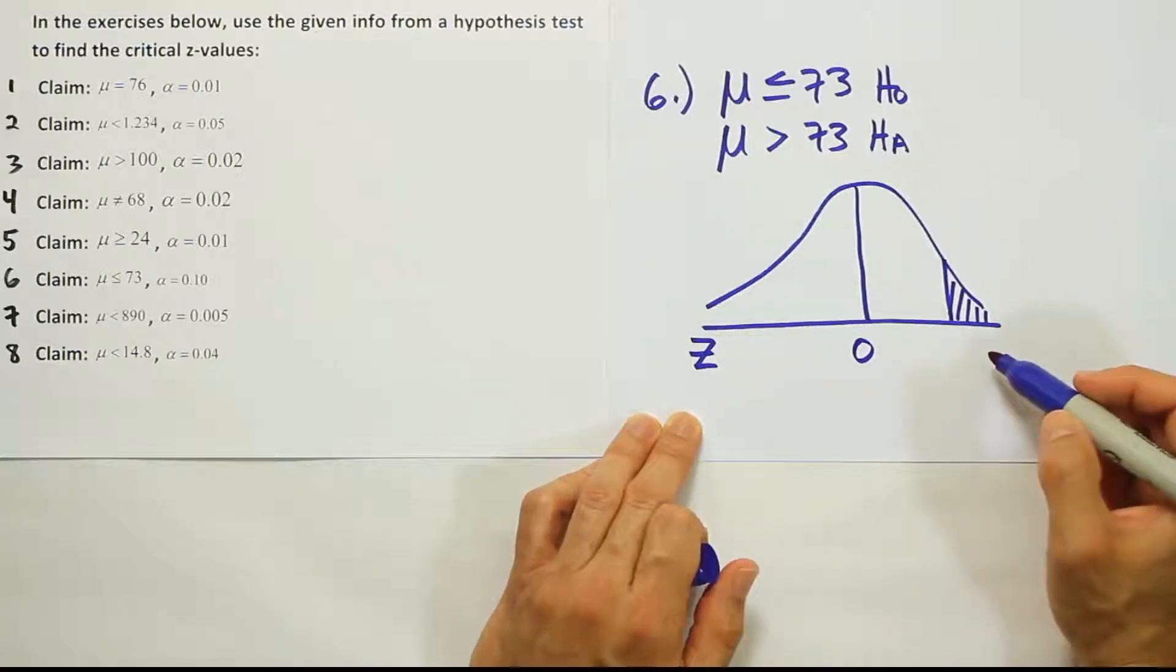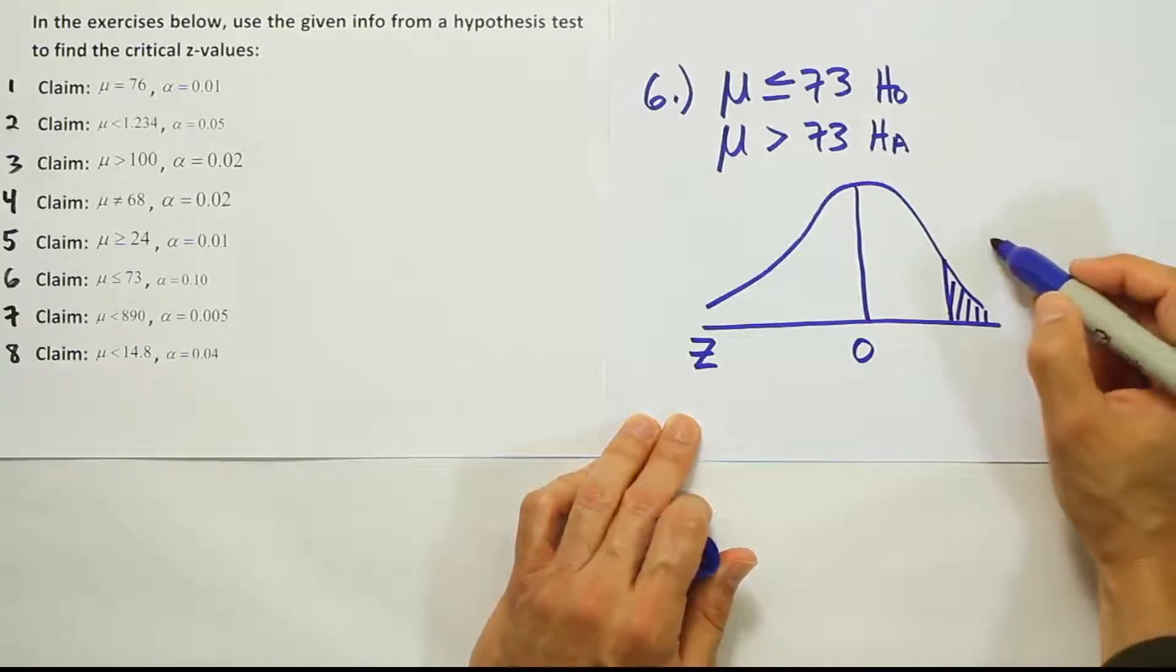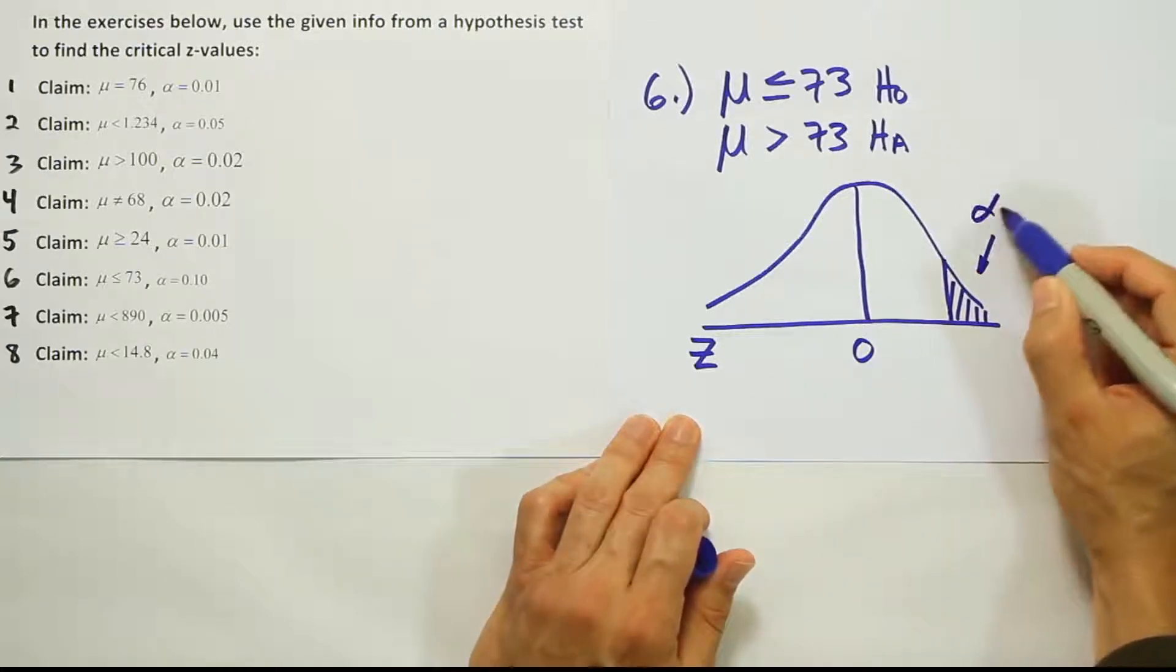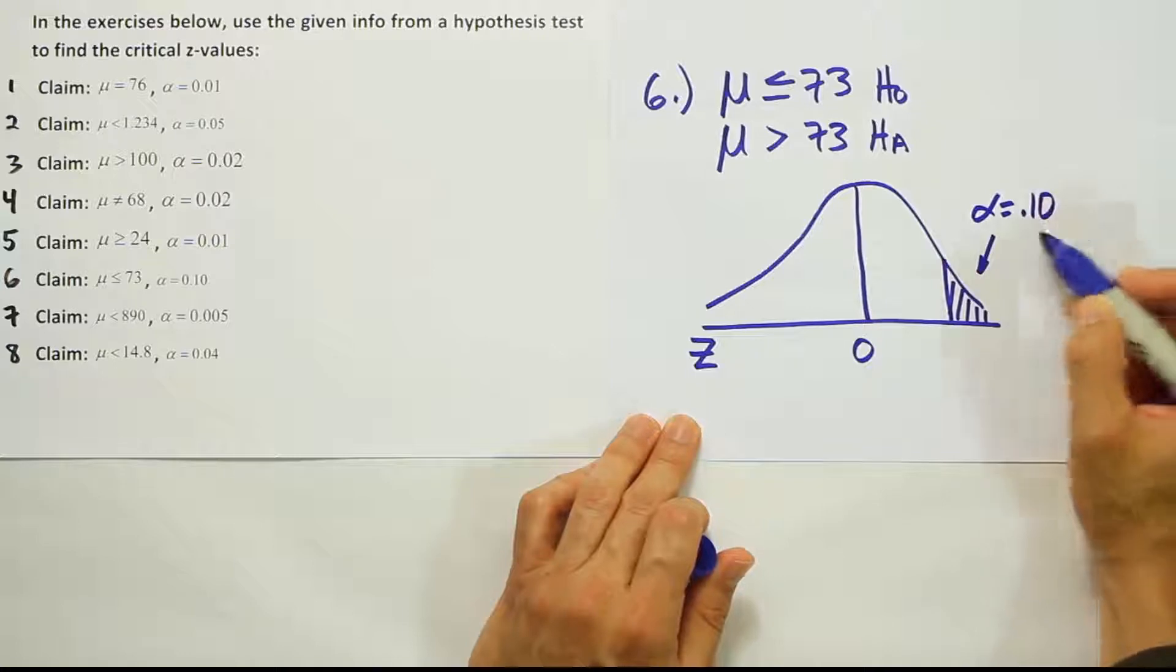Now, in number six, the alpha is 10%, right? Alpha is 10%. All that alpha will be put into one tail on the test.